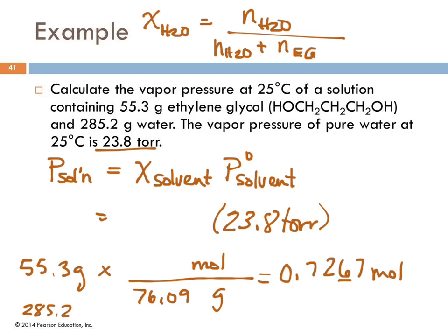For water: 285.2 grams divided by the molar mass of water, 18.02 g/mol, gives 15.8269 moles of water. The uncertainty is in the fourth decimal place.